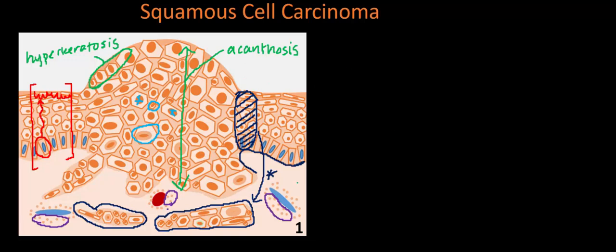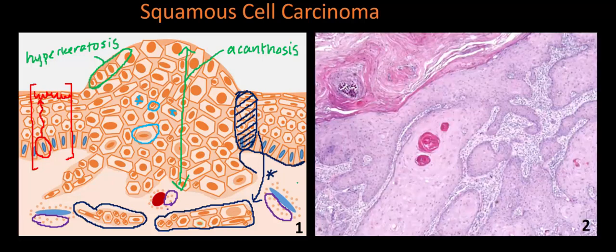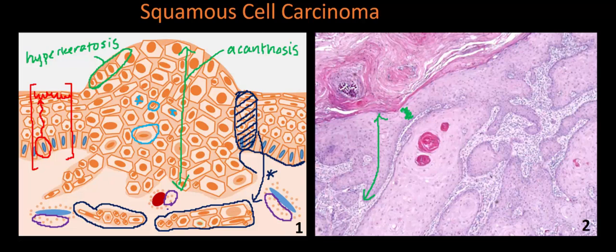Now let's look at an actual H&E stain of a squamous cell carcinoma. At the top in the dark pink stain is the stratum corneum, which mostly consists of keratin and is the uppermost epidermal layer. Directly below it in lighter purple is the remainder of the epidermis. Notice there is wide variation in the overall thickness of the epidermis — areas of acanthosis showing diffuse hyperplasia. Normally the epidermis would be much thinner, but here we see clear acanthosis.